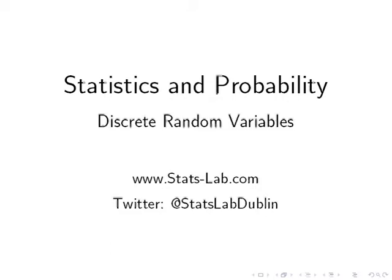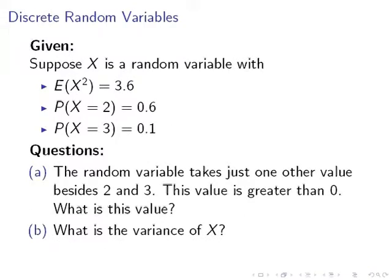In this presentation, we're going to look at a discrete random variable exercise. Suppose we're given this random variable X with the following information: the expected value of X squared is 3.6, the probability of X equal to 2 is 0.6, and the probability of X equal to 3 is 0.1.